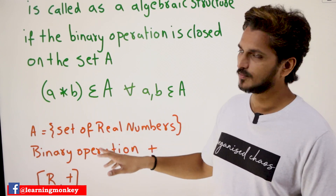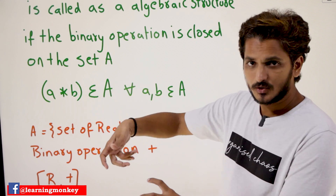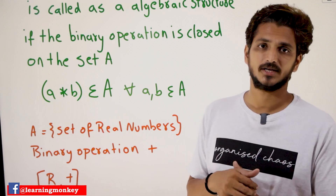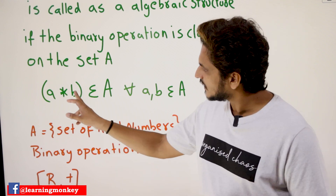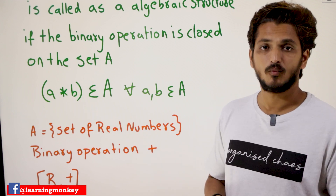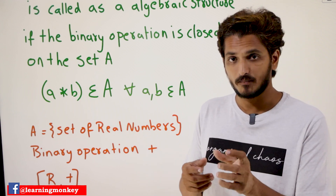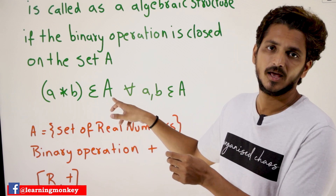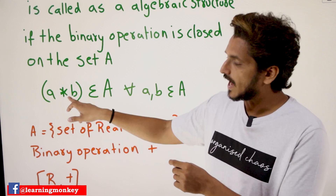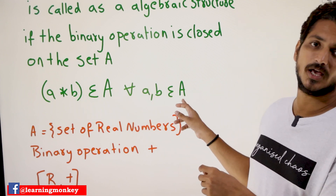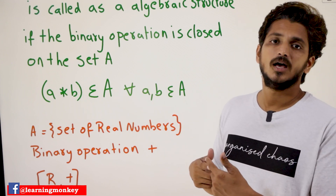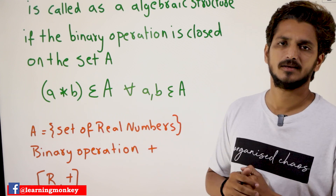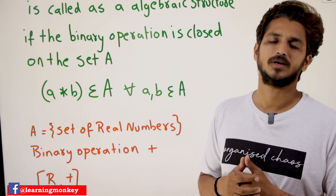The definition of closure property: you take any two elements A, B from the set. You apply the binary operation A star B. Whatever output you get by applying the binary operation, that output should belong to set A. If this holds for all A, B belonging to A, then we say the operation is closed under the set A. That is what closure property means.